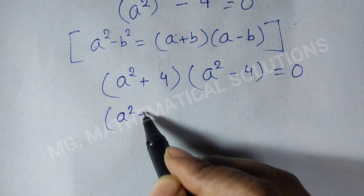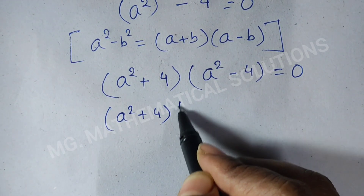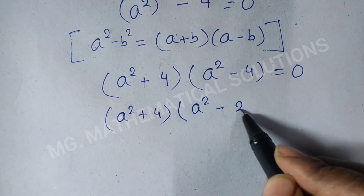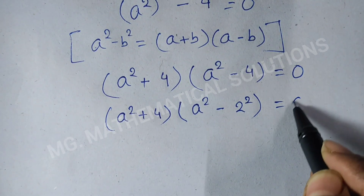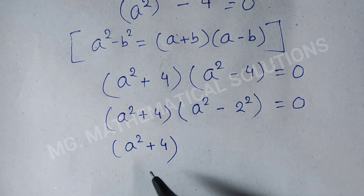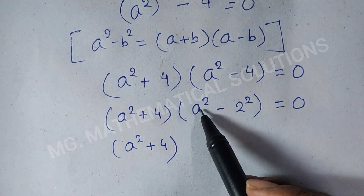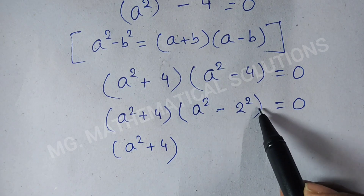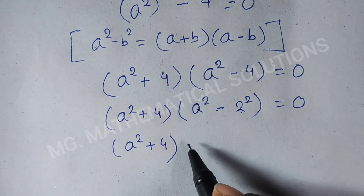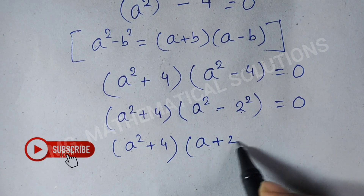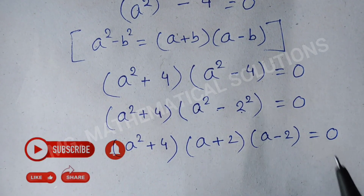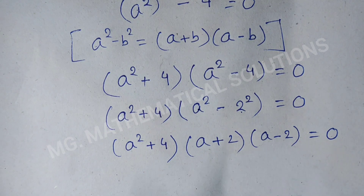Then, a squared minus 4 can be written as a squared minus 2 squared. So, the full factored form is (a squared plus 4) times (a plus 2) times (a minus 2) equals 0. We are getting three cases.